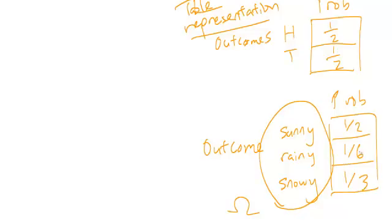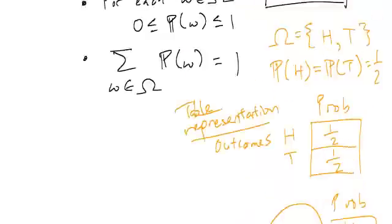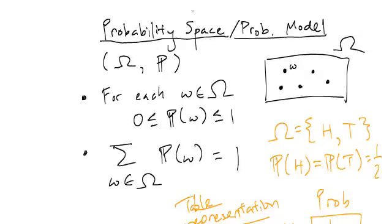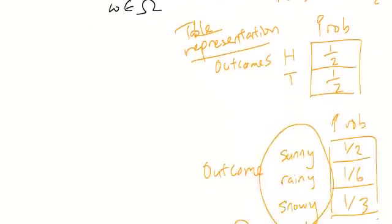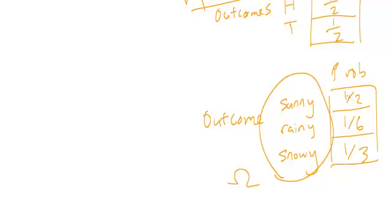So in this sense, a probability space can always be represented by one of these tables of non-negative entries that add to one.